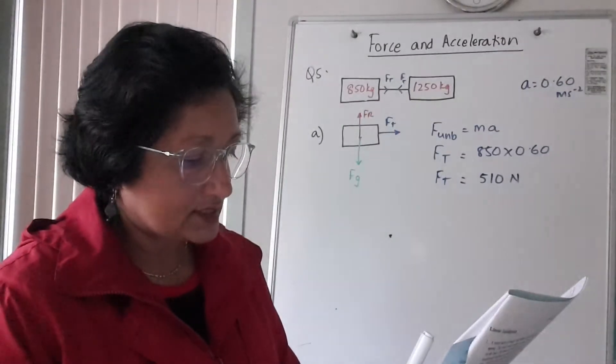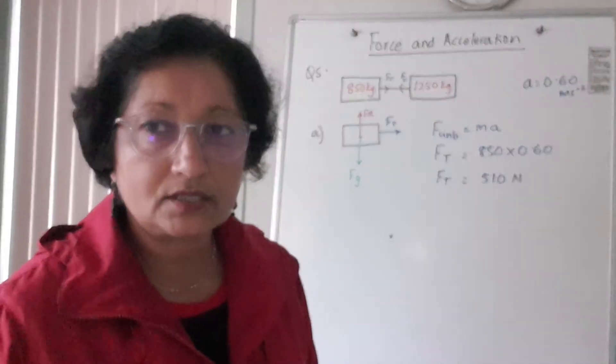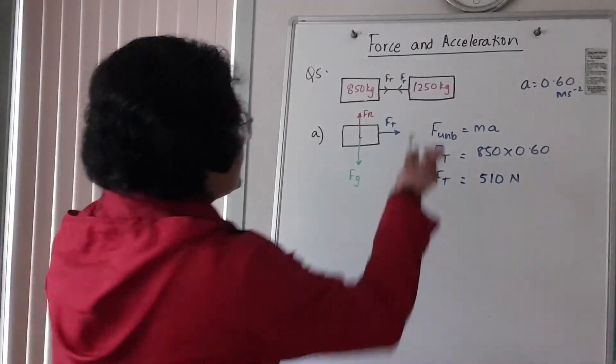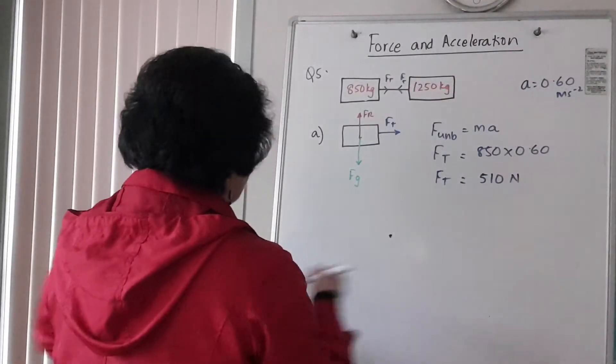Then draw a diagram showing all the forces acting on the car which is towing. So that is the car which is towing. So this is C.